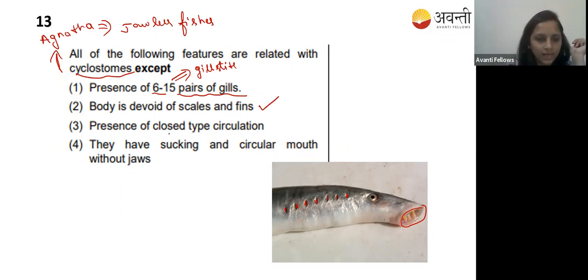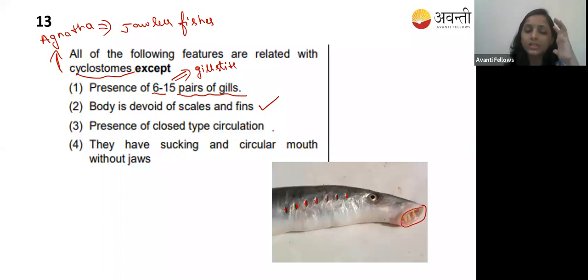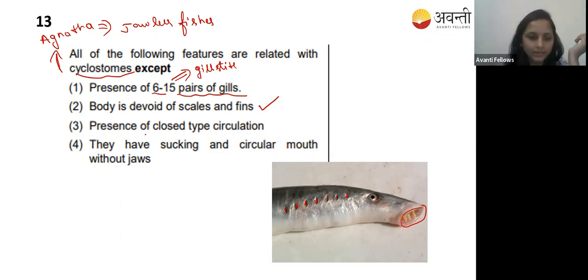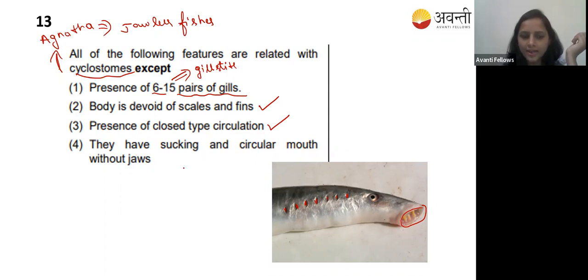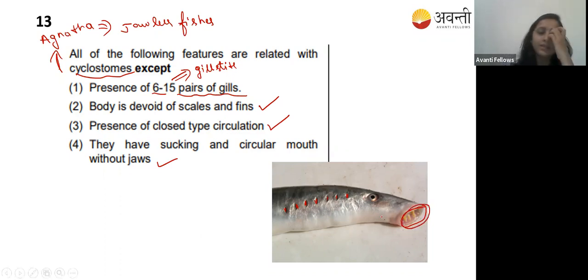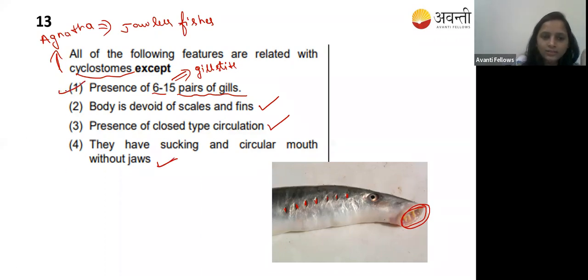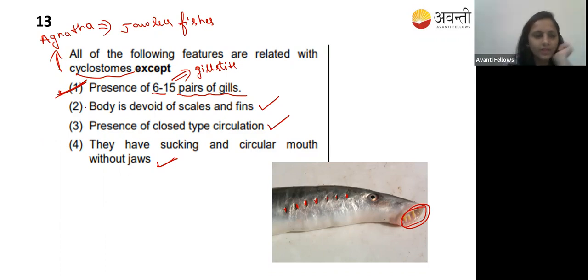Option four - they have sucking and circular mouth without jaws - yes, that is correct. So option one is the correct answer because cyclostomes have gill slits, not pairs of gills. The other options are correct statements about cyclostomes.